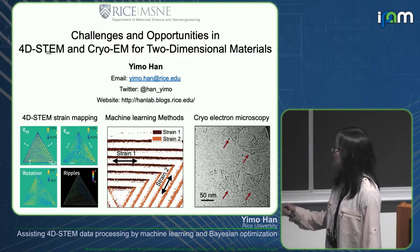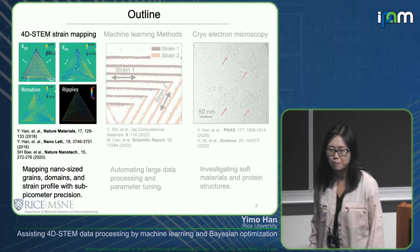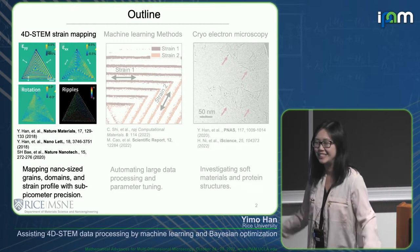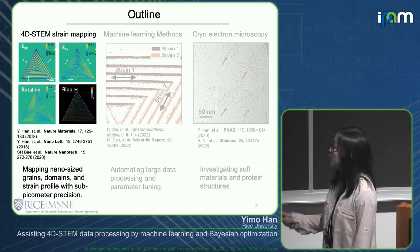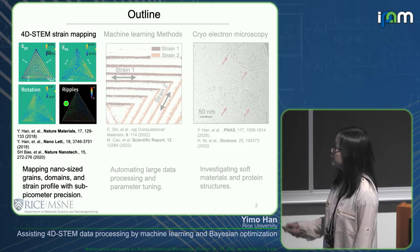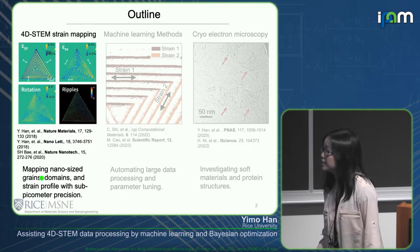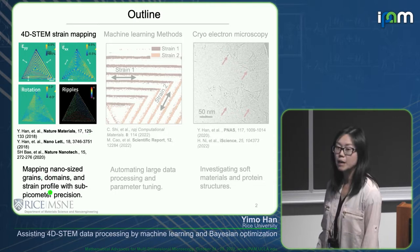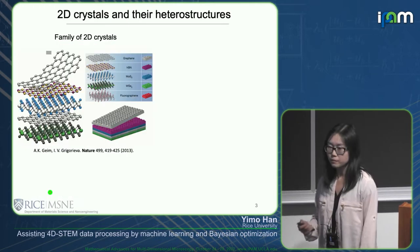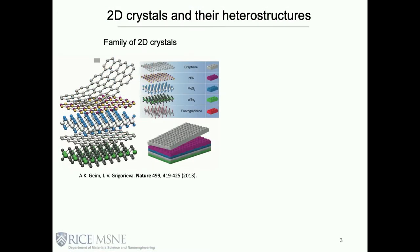I don't need to introduce electron microscopy since you've been here all week. First I'll talk about 4D-STEM strain mapping techniques to study 2D materials, especially strain domains, with very high precision. To start, I want to introduce 2D materials, which you may not be familiar with.